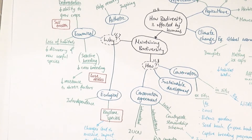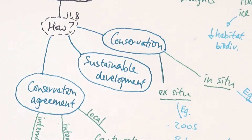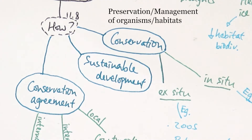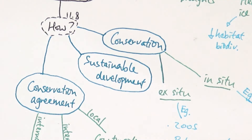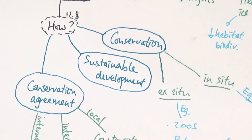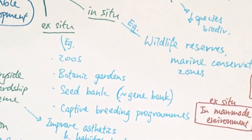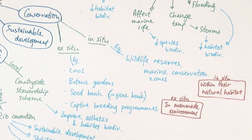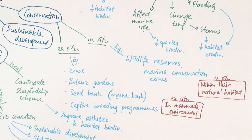Moving on: how do we actually maintain biodiversity? There are three parts — conservation, sustainable development, and conservation agreements. Conservation is the preservation or management of certain environments or organisms within a habitat. We can conserve in two ways: in-situ, meaning within their natural habitat — for example, wildlife reserves or marine conservation zones — where human access is restricted to protect the species.